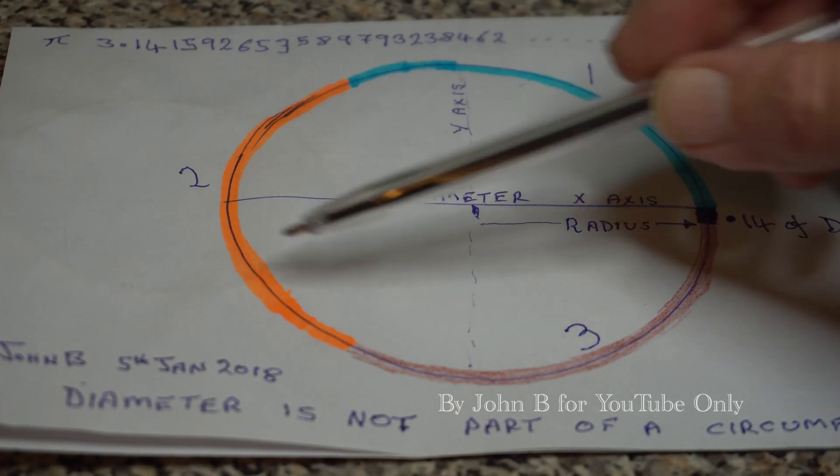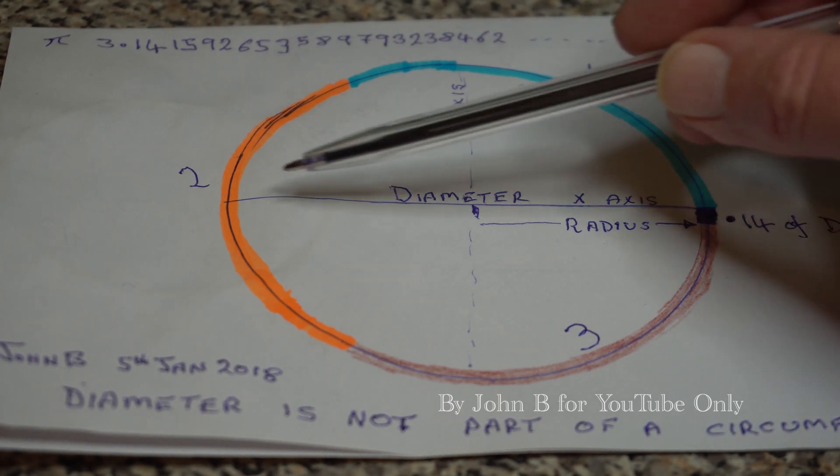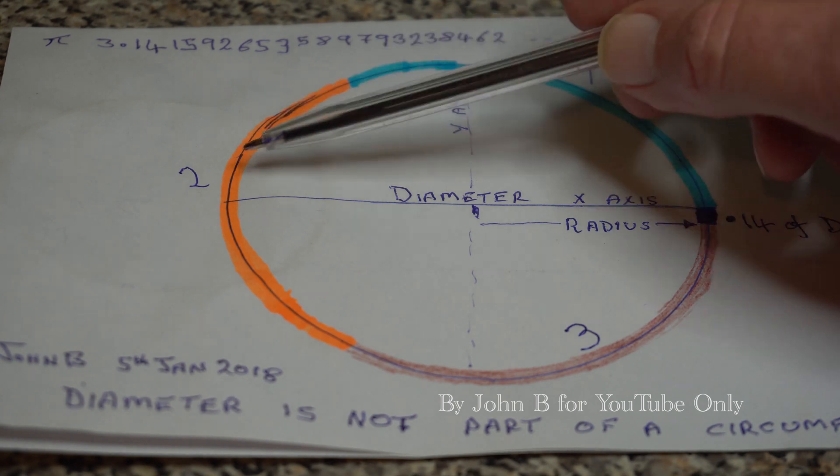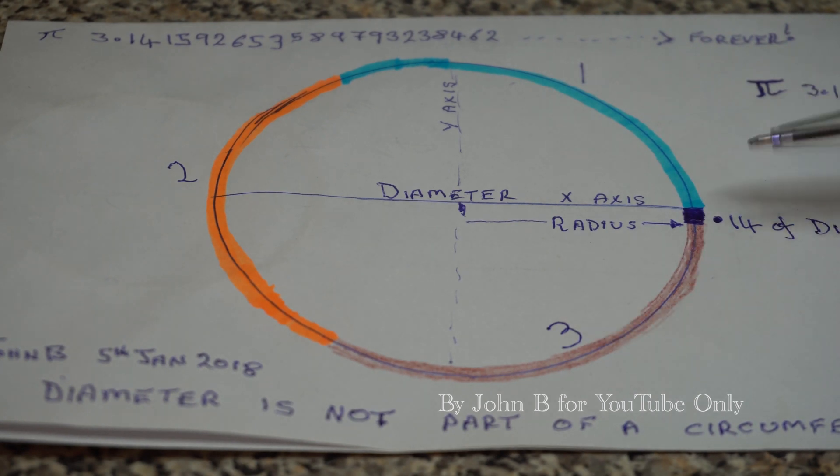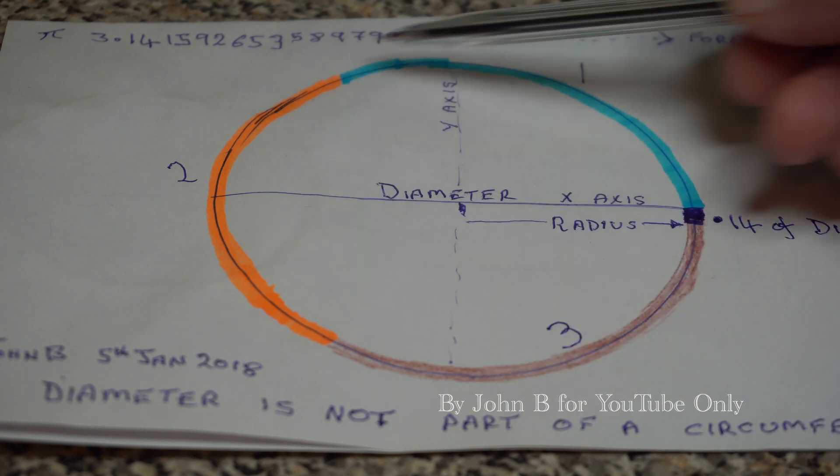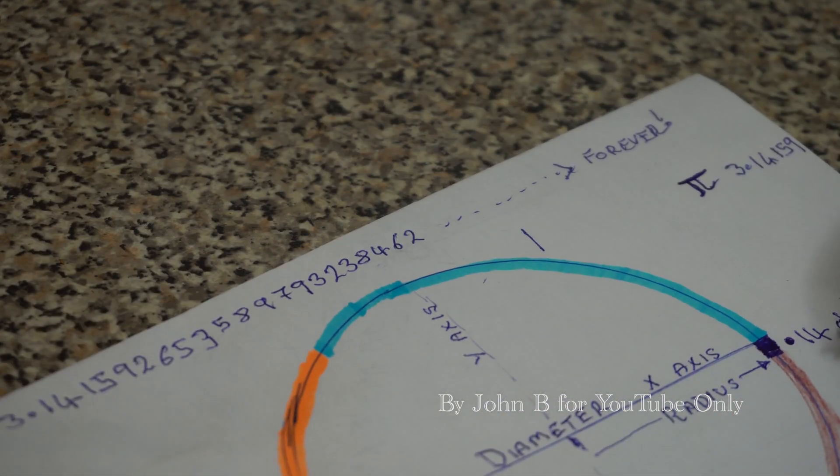That's a circumference, and as I said in part one, that's a diameter. The Greeks, thousands of years ago, sussed that if you take the diameter and lay it over the circumference you get one, two, three point one four of the diameter completes the circumference. If you zoom in you'll still have a gap.